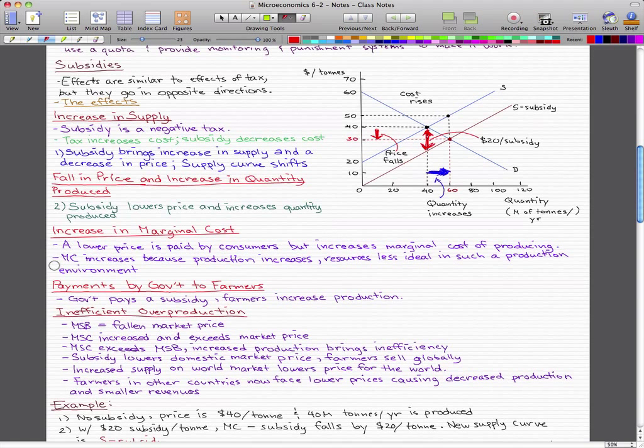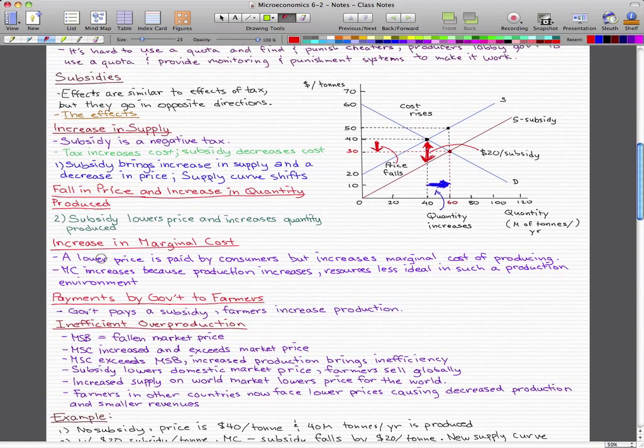Another effect is that the payments are from the governments to the farmers. Usually it's the governments that pay the subsidy, and the farmers increase the production.